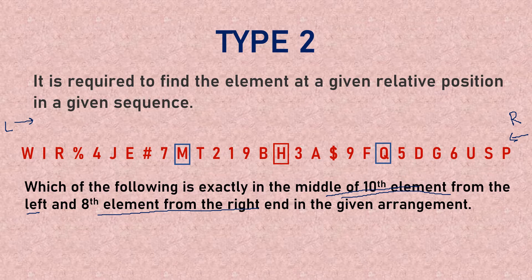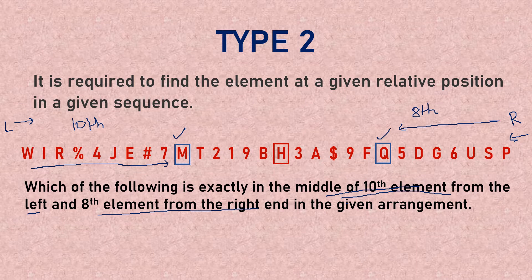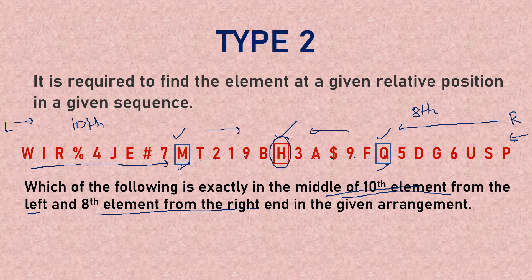Counting 10 from the left, we reach M. Counting 8 from the right, we reach Q. Now we find the element exactly between M and Q. Counting the elements between them gives us 11 total. With 11 elements, 5 on either side means the middle is the 6th element from either side. Counting 6 from M or 6 from Q, we arrive at H — that is our answer.